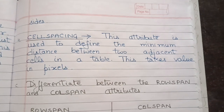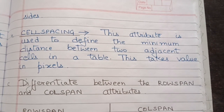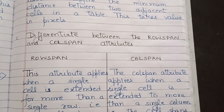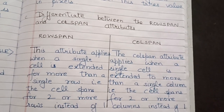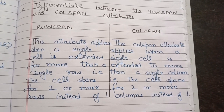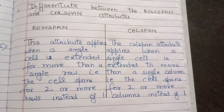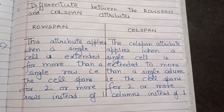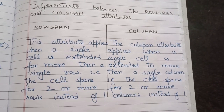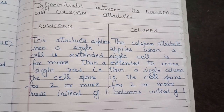Next question: differentiate between the row span and col span attributes. Row span applies when a single cell is extended for more than a single row — that is, the cell spans two or more rows instead of one. Col span applies when a single cell is extended to more than a single column — that is, the cell spans two or more columns instead of one.